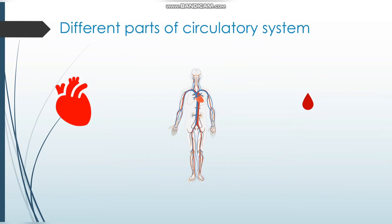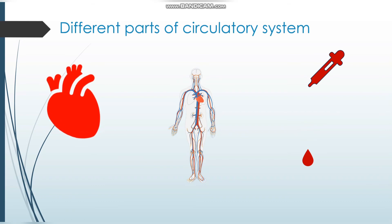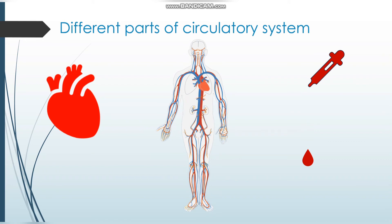The different parts of the circulatory system are: blood, heart, and blood vessels. Can you see a network of blood vessels in the human body? It's a huge network. So the three parts of the circulatory system are: first, the heart; second, blood vessels; and third, blood.